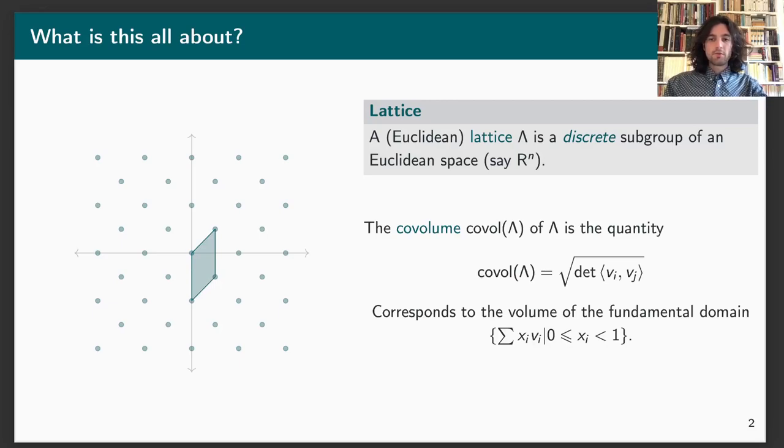In a lattice, you might want to measure the density of points in your structure and for that you use a geometric invariant which is called the co-volume. It can be computed from your basis vectors as the root of the determinant of the Gram matrix, that is to say the matrix of inner products of your vectors. It also corresponds to the volume of the parallelepiped spanned by your vectors. I say it's a geometric invariant because it's invariant under a change of basis.